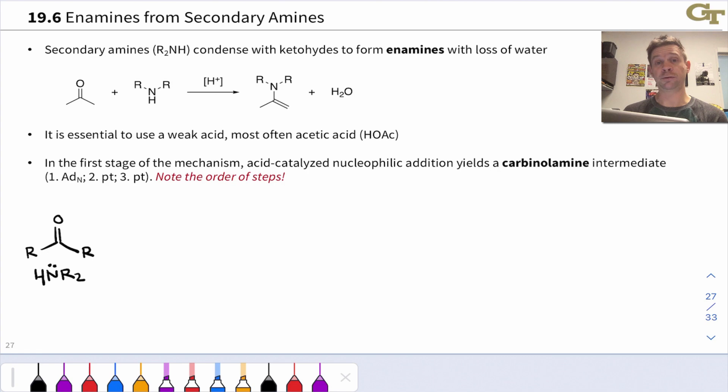As in the reaction of primary amines with ketones and aldehydes, we need to use a weak acid for this to avoid protonating the nucleophile, and acetic acid is typically the acid of choice.